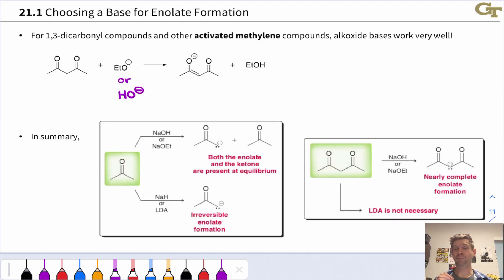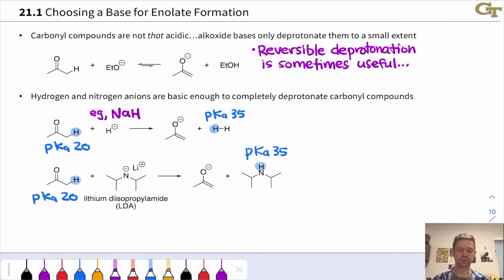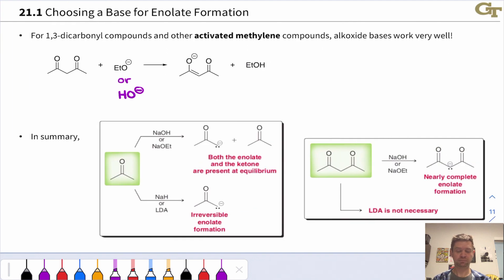For 1,3 or beta-dicarbonyl compounds and other compounds where the acidic position is linked to two resonance electron withdrawing groups, alkoxide bases work great, and this includes hydroxide of course. So ethoxide, methoxide, hydroxide are the most common bases used here. These actually work great, and now notice our arrow has changed from reversible and favoring the reactants in the case of a plain vanilla ketone like acetone, to entirely favoring the products in the case of a 1,3-dicarbonyl compound like acetyl acetone.